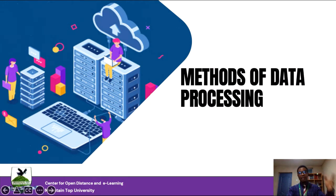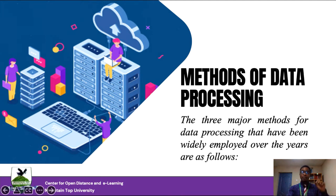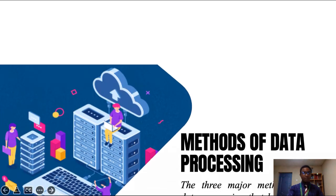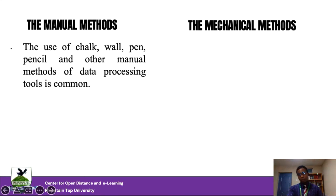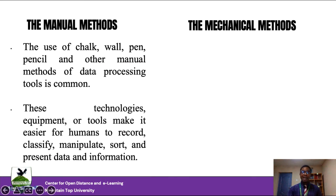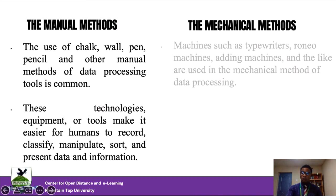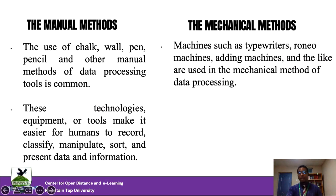There is a process by which data is converted to information — this takes us to the methods of data processing. There are three major ways data has been processed over time. The first two earlier techniques were the manual and mechanical methods. In the manual method, human beings use tools like chalk, pencil, or a wall to gather and process information — used in libraries and schools for recording, classifying, manipulating, sorting, and storing information.